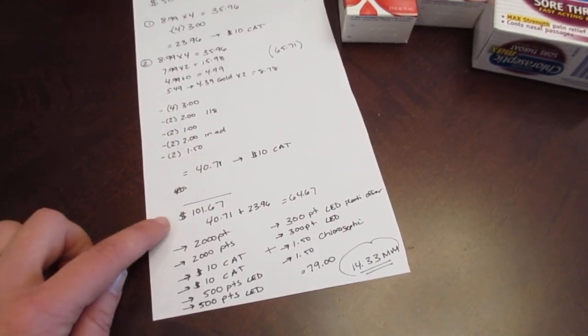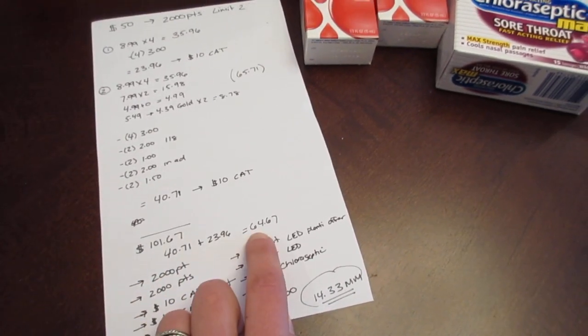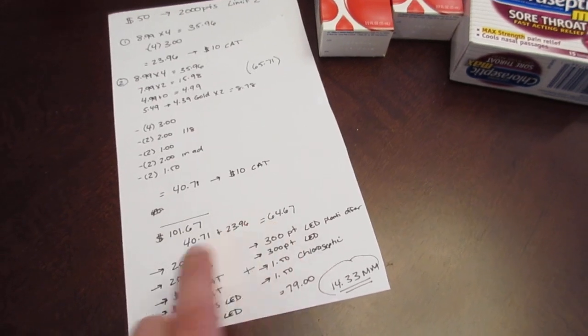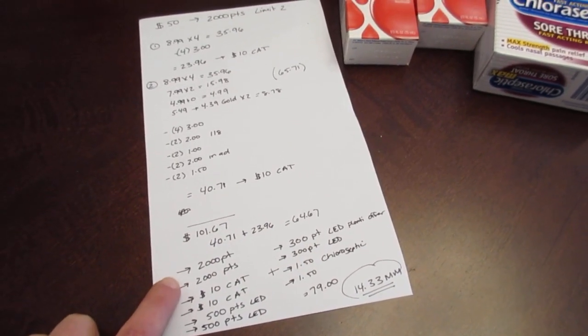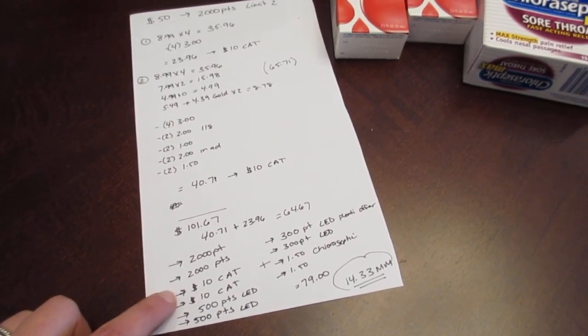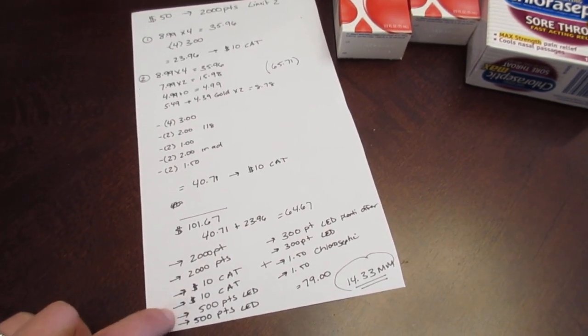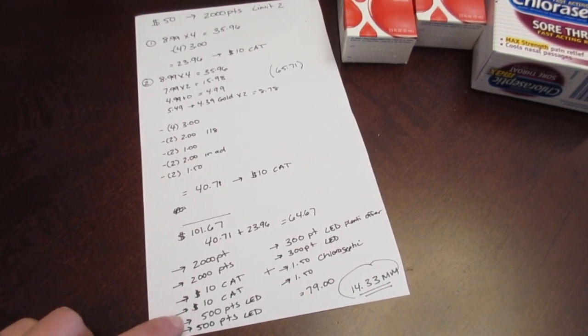So this is how it breaks down. It was $101.67. After all the coupons, I paid $64.67. I got the 2,000 starting points twice because I spent $100. So I got back the $40 from the starting points. I have two $10 Catalinas. I got the 500 points for the LED lights, and that's a limit of two, so I got those back.